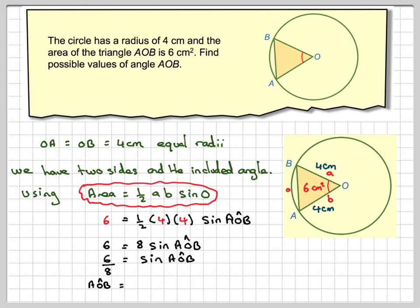To find the angle AOB, we need to do sine to the minus 1, the inverse of sine 6 over 8. So jumping over to my GDC.